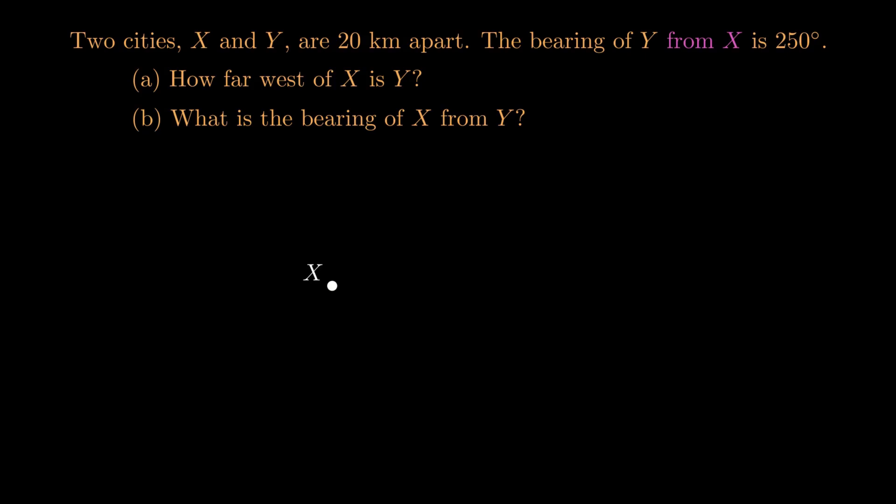Because we're measuring a bearing from X, as we said last time, it's by assumption a true bearing. That means we're intending to spin clockwise from north. So from this point X, we'd better chuck a north out there for reference.